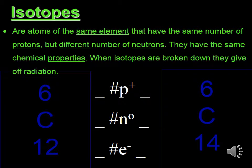Isotopes are atoms of the same element that have the same number of protons but a different number of neutrons. They have the same chemical properties. When isotopes are broken down, they give off radiation. Both carbons have six protons and six electrons, but one carbon has six neutrons and the other has eight neutrons, so they are isotopes of each other.